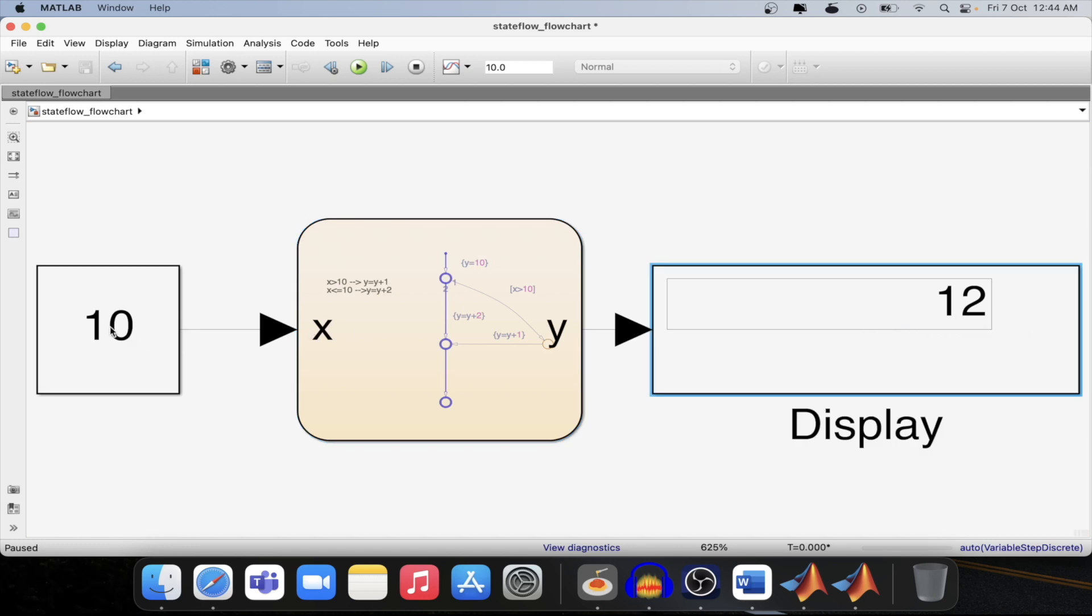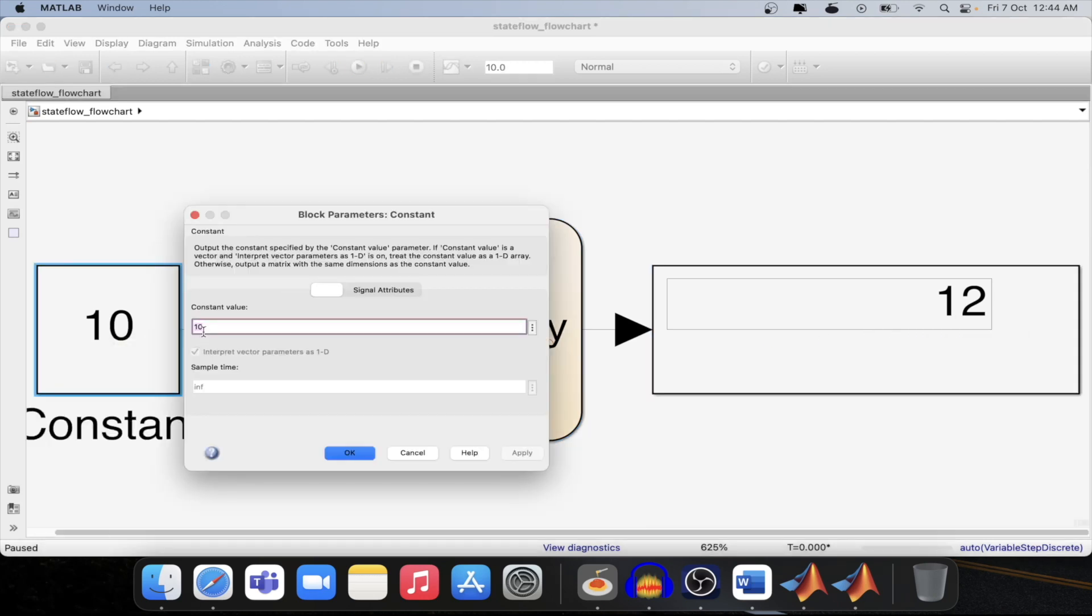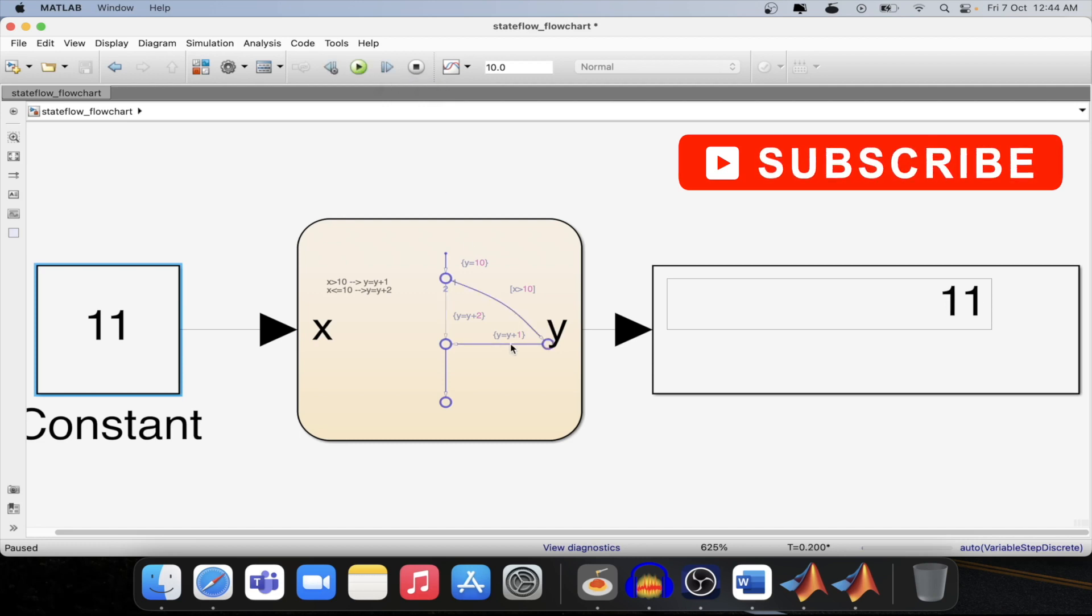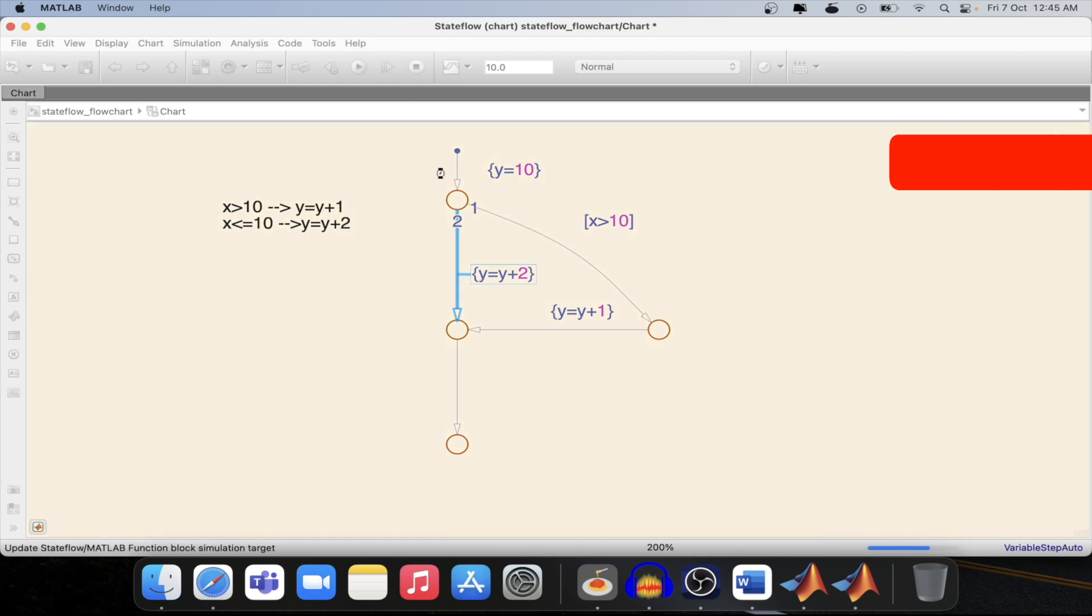Now if I change this particular value to 11, now condition 1 will be satisfied. And now if I change it again, like if I step it again, then the second condition will be satisfied. As you can see over here, the second condition is satisfied.